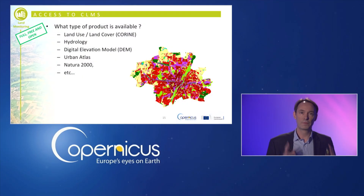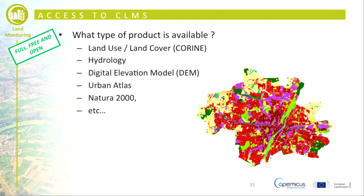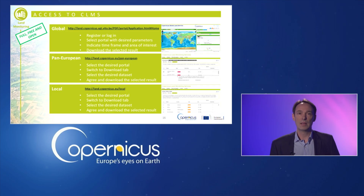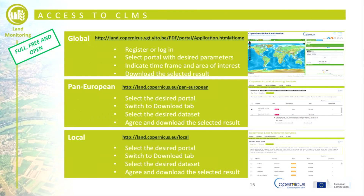Let's start with CLMS, the Copernicus Land Monitoring Service. It provides, under full, free and open access, geographical information on land cover and related variables such as vegetation and the water cycle. CLMS operates at global, pan-European and regional levels, providing different products at different resolutions.